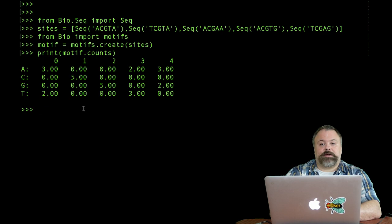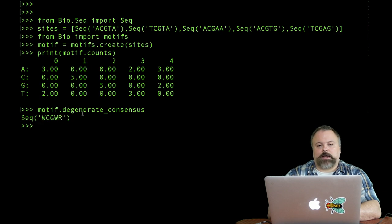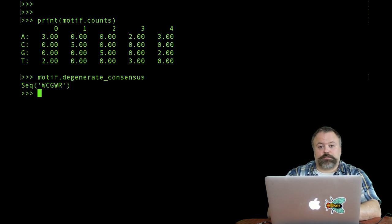We can also define a degenerate consensus sequence as I've done previously. In this case, it's WCGWR using the IUPAC codes that I defined in my previous video. There's also a BioPython way to define searching using a position-specific scoring matrix.